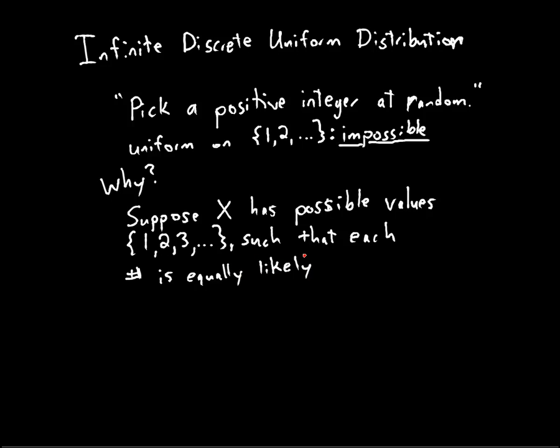Such that each number is equally likely. What does it mean to be equally likely? Well, it means the probability of getting that number is the same. So there's some P, the probability that the random variable is equal to one, that's the probability that the random variable is equal to two, etc. So that every number has probability P of being chosen.